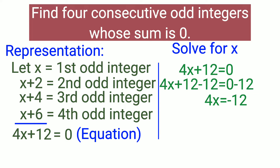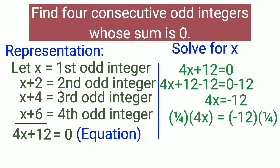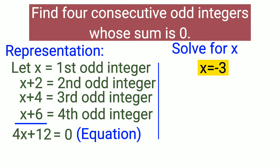Next, let's remove 4 from 4x by applying the multiplication property of equality. We are going to multiply the whole equation by the reciprocal of the coefficient of 4x, which is one-fourth. One-fourth times 4x is just x, and negative 12 times one-fourth is negative 3. Our final answer: x is equal to negative 3. This is our first odd integer.